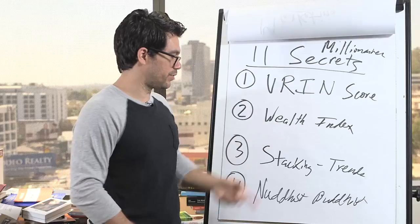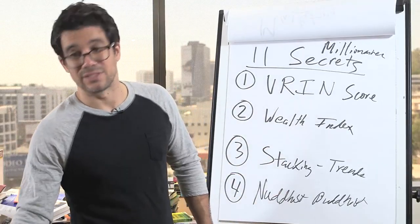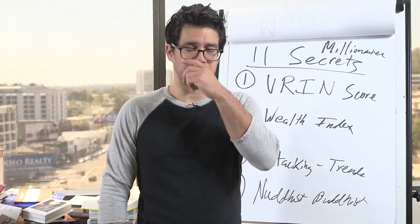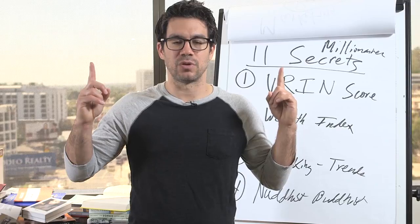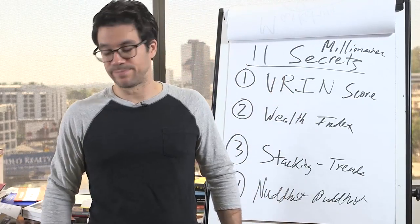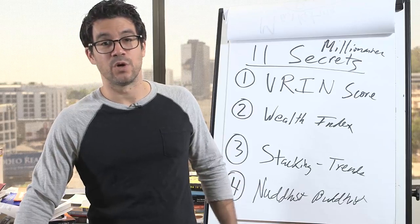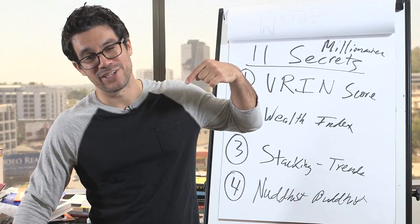So check it out. We'll be talking on VRIN, wealth index, accumulation score, stacking multiple trends, nudist Buddhist, and lots of other stuff. Seven more things at the minimum. All right. So click the link and I will see you on my talk. We'll be talking all these in depth. All right. Cool. Oh, and subscribe to my channel. I'm always supposed to add that. My video guys say to do that. All right. Talk to you soon. Bye.